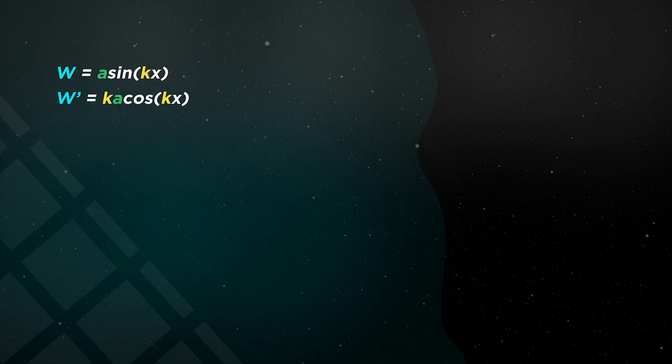We'll be taking how fast this wave changes when the position changes, symbolized by w prime. And we also take how fast that change happens to get another equation, w double prime equals negative k squared a sine kx, which is just negative k squared w. If these don't make sense, watch a video on basic differentiation and then please come back.